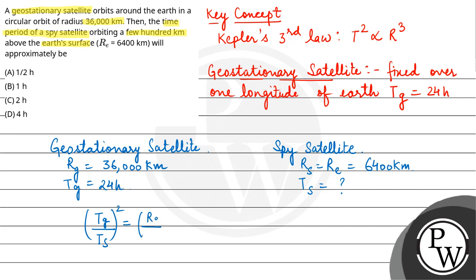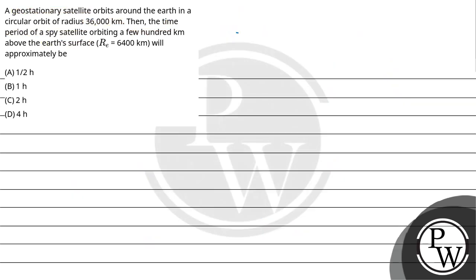Putting the values, TG is 24, TS you have to find. So it equals RG which is 36,000 upon 6,400 raised to the power 3/2. So TS is equal to 24 into 6,400 upon 36,000 raised to the power 3/2.